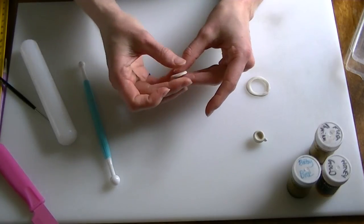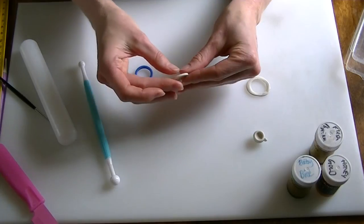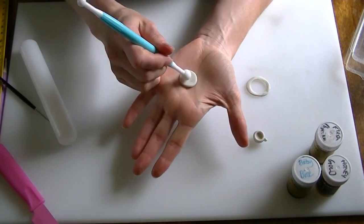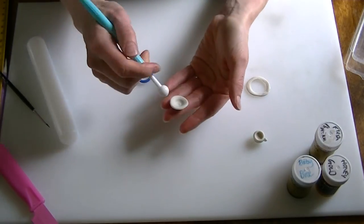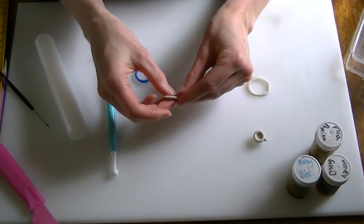Now because it's quite thick, I'm going to gently pinch around the edges to make it a little bit thinner. Then to make it slightly more saucer shape, I'm going to press into the center just a little bit with my ball tool.